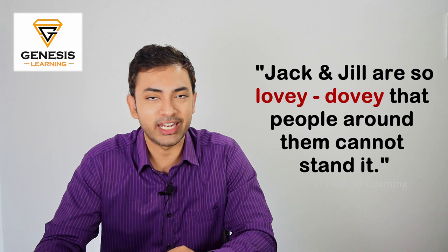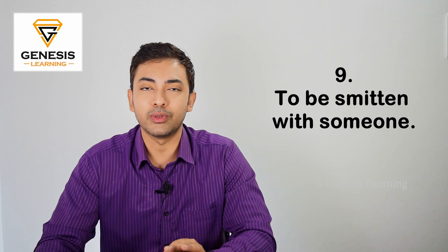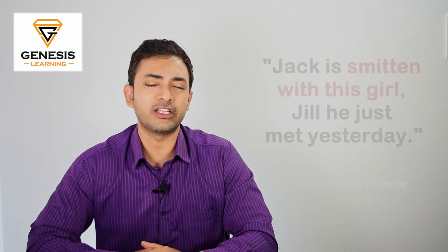The next one, to be smitten with someone. This basically means to be completely captivated by someone and feel immense joy. An example sentence is, Jack is smitten with this girl, Jill, he just met yesterday.